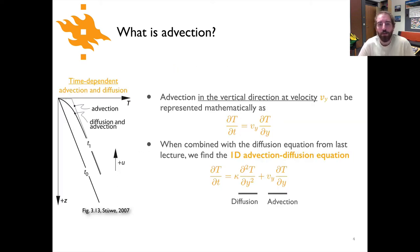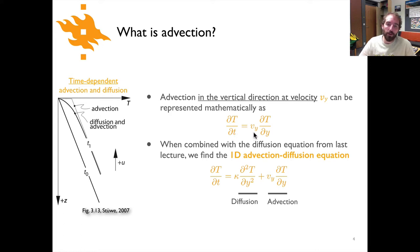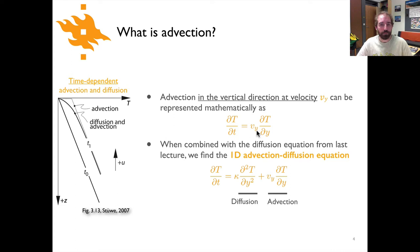Mathematically, we can look at advection in a similar way to how we've done things for heat conduction. On the left side we have the change in temperature with time, and if we only consider advection, that's simply equal to Vy times the temperature gradient with depth. Vy is the velocity of material in the vertical direction — the y component. That's the basic representation of advection in an equation.